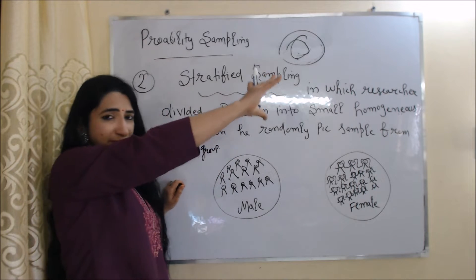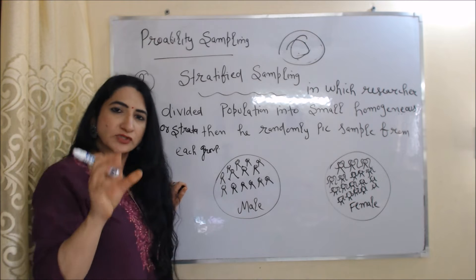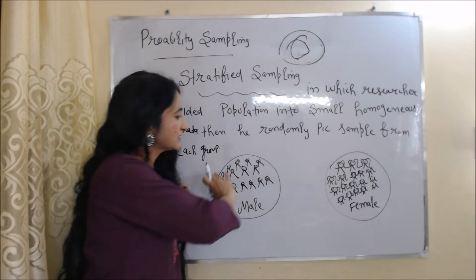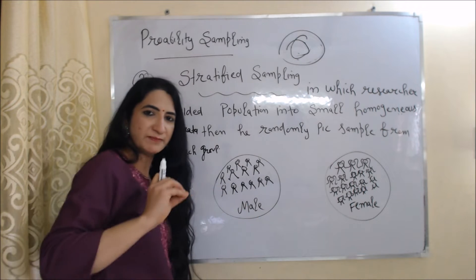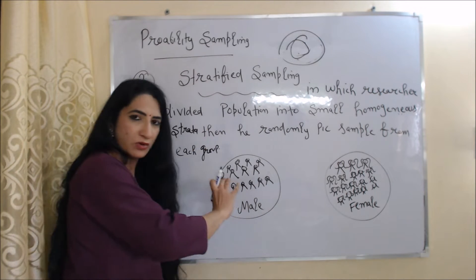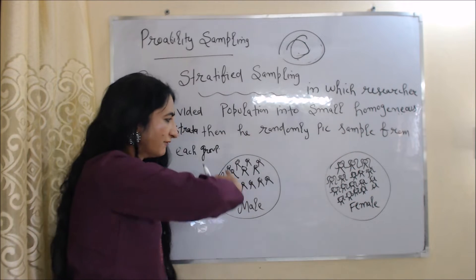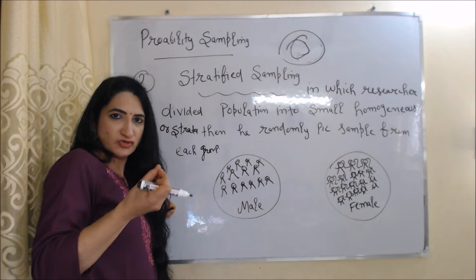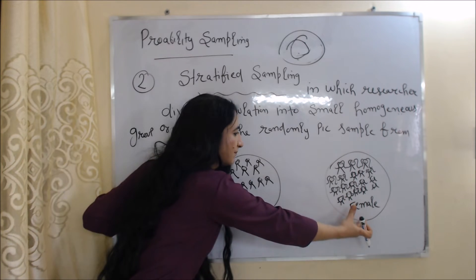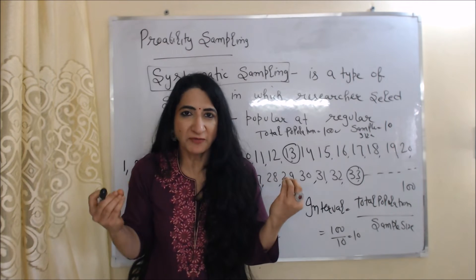In stratified sampling, researchers divide the population into small homogeneous groups, then randomly pick a sample from each group. For example, a researcher divides the population based on gender — one group includes all males and another includes all females. After dividing the population, he picks some samples from the male group and some from the female group. This is called stratified sampling.